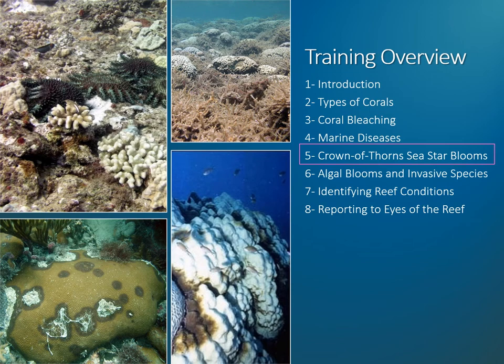In this module, you will learn to recognize severe blooms of Crown of Thorns Seastars, which have fortunately been a relatively uncommon occurrence in Hawaii. Please remember that Crown of Thorns Seastars are a native coral reef species in Hawaii, so observing a few of them at your favorite reef site is completely normal. The Eyes of the Reef Network requests that you only report Crown of Thorns Seastars if you observe more than 25 individuals during a normal reef visit. Please note that Crown of Thorns Seastars are sometimes referred to as COTS.